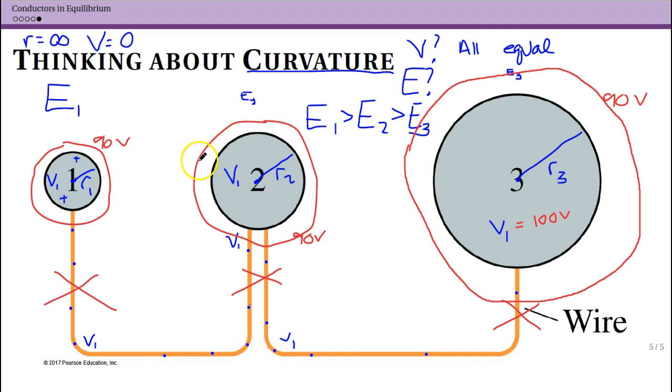So they're going to be circles or spheres around our sphere. Now one thing that I struggled to draw, as you can see, I struggled to draw a circle, is that actually the equipotential is not the same distance from each of these. Since your electric field here is weaker, you actually have to go farther before you have the same change in voltage. So this equipotential is actually closest to the sphere, and this one's in the middle.